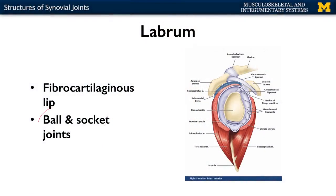Very similar to the menisci is what's referred to as a labrum. These are exclusive to ball and socket joints — your shoulder joint and your hip joint. What it is is just an extension of connective tissue that forms a little lip to allow for a better fit of the ball portion. In the case of the shoulder, the ball would be the humeral portion, allowing it to fit better into the socket — in this case, the scapula.